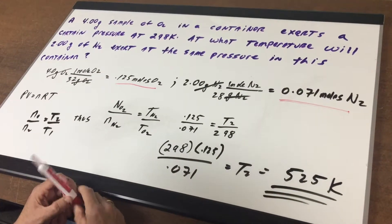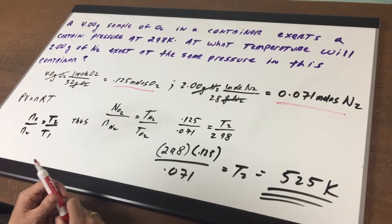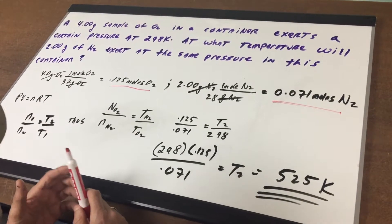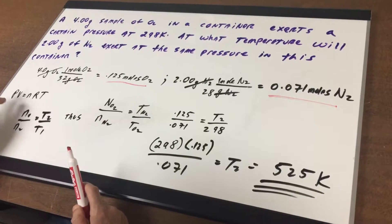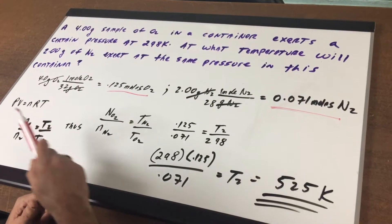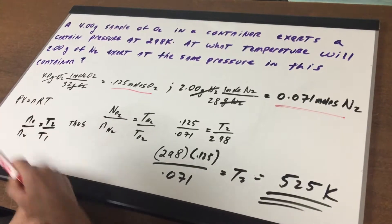Now, if you remember the ideal gas law says PV equals nRT. We're at the same pressure, and we're in the same container, that means that P and V are going to be constant. So what we've got to do is focus on the n and the T.